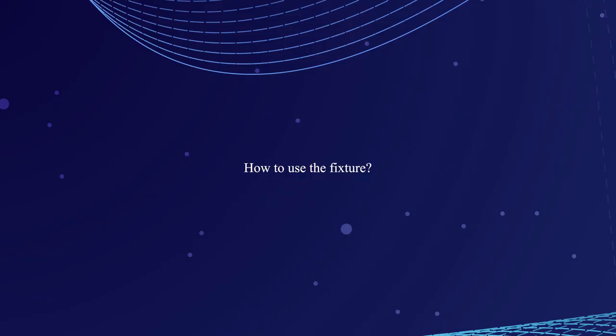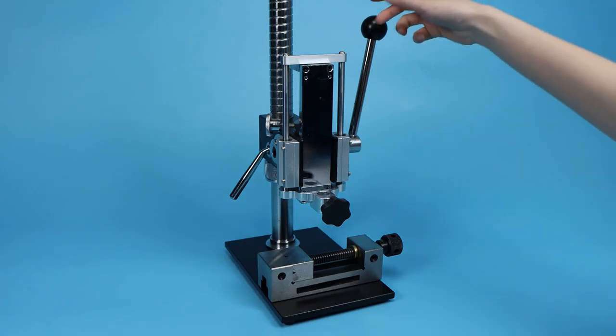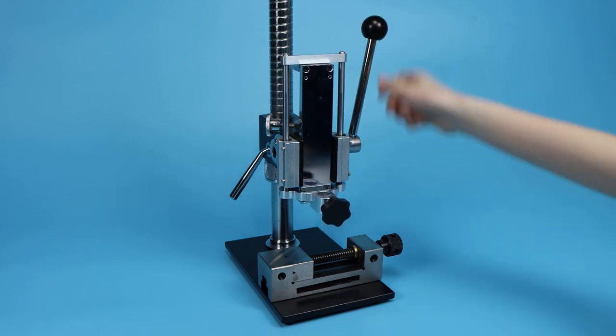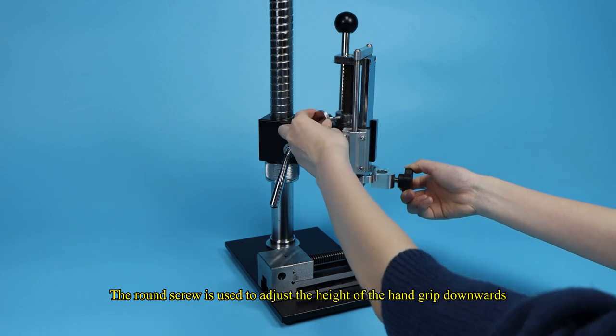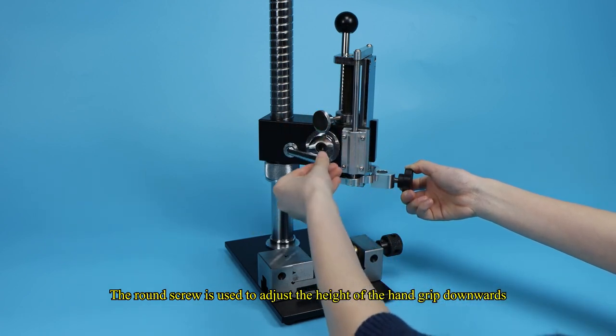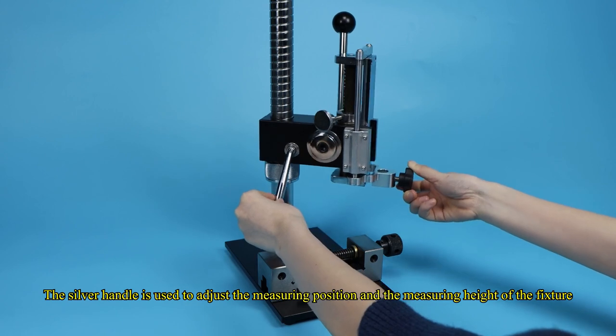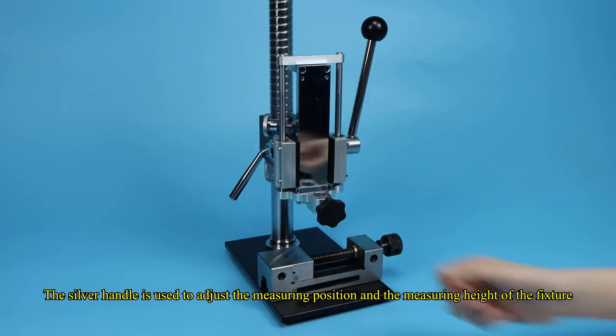How to use the fixture. This is the test grip. The round screw is used to adjust the height of the hand grip downwards. The silver handle is used to adjust the measuring position and the measuring height of the fixture.